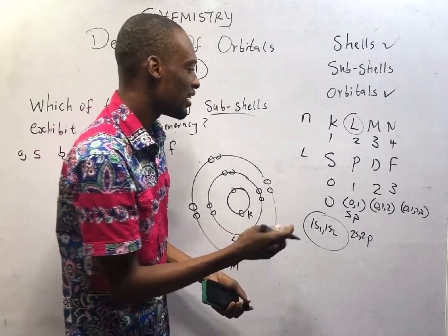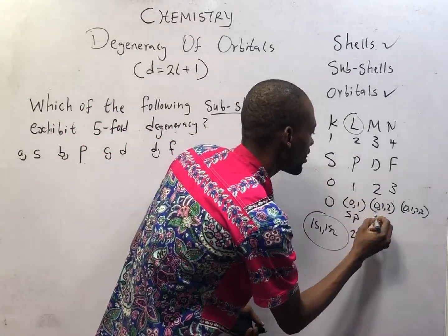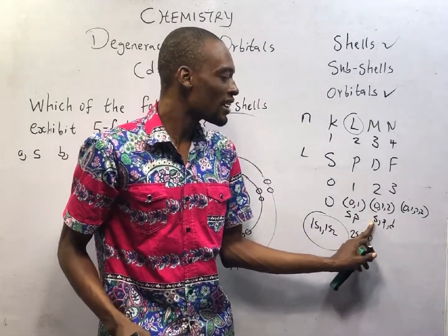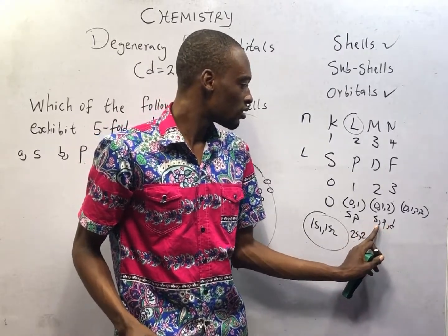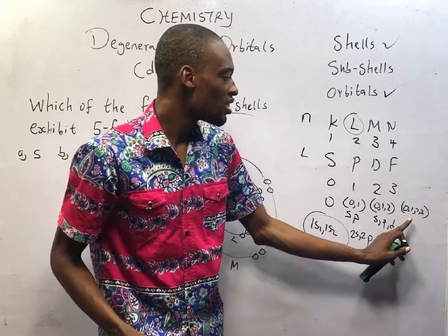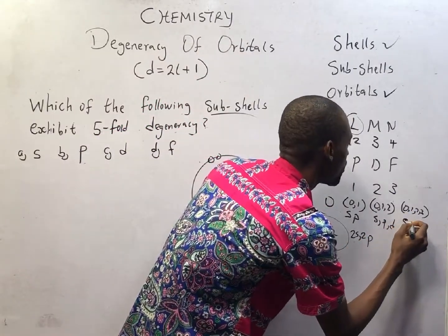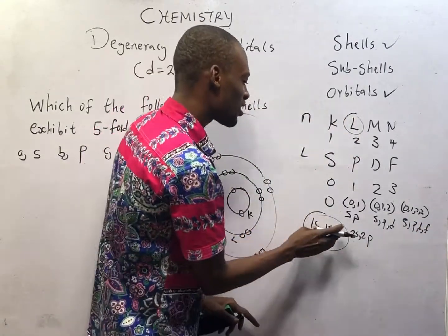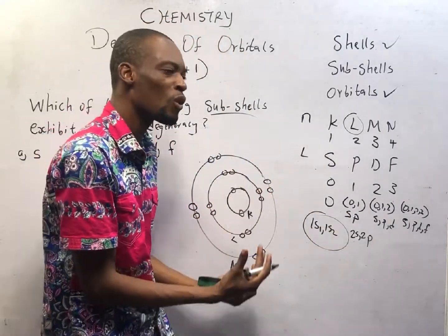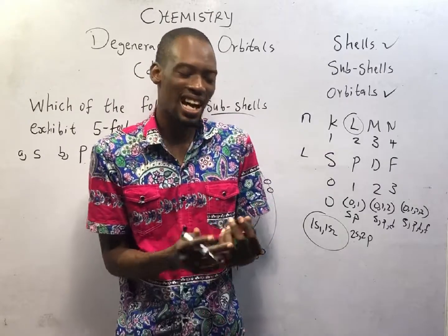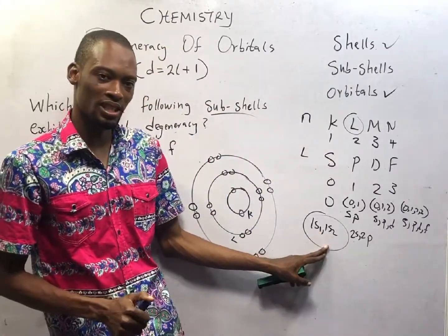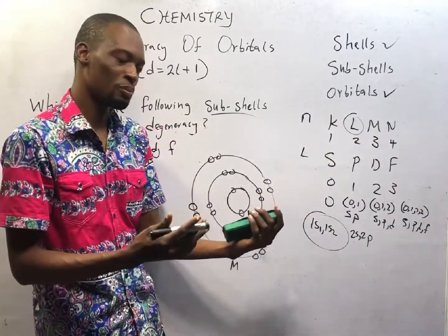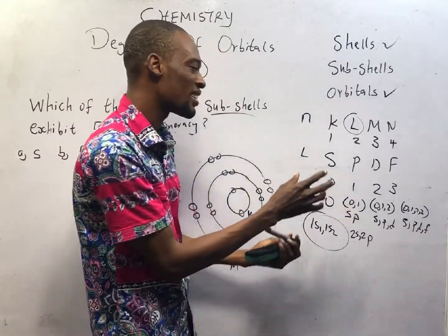As you go ahead, for n=3 you have 0, 1, and 2: 0 is S, 1 is P, 2 is D. So the configuration will end with D — 1s, 2s, 3s, 3p, and 3d. For n=4, you have 0, 1, 2, and 3: S, P, D, and F. So 1s, 2s, 3s, 4s, 2p, 3p, 4p, 3d, and so on — these are referred to as the orbitals. So this is the shell (K, L, M, N), L is the subshell (S, P, D, F), and the orbitals are 1s, 2s, and so on. A subshell can contain one or more orbitals.